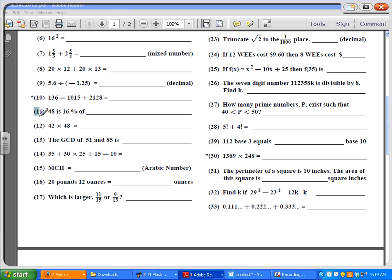It says 48 is 16% of what? So 48 equals 16 over 100 times what? I'm going to divide by 16%. 48 divided by 16 is 3, and the percent is 100, so that's 300.